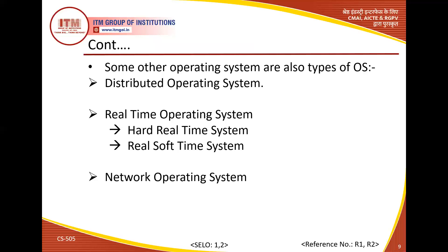Some other types of operating system also support different operating systems. First is the distributed operating system — its main purpose is that in a multi-environment, when multiple users work, data and resources are properly distributed among them at different levels of processing.